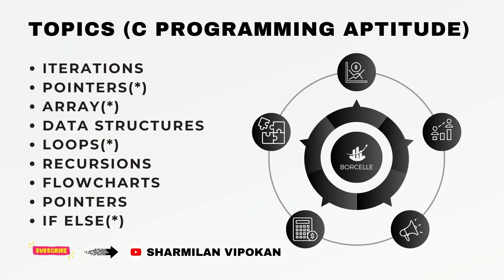Next is C programming aptitude. Topics include: Iterations, Pointers, Arrays, Data Structures, Loops, Recursions, Flowcharts, Pointers and efforts. These are the main important topics. Pointers, Arrays, Loops, and if-else are key. There will be MCQ type questions — select output or missing statement, or find an error. Clear the basic programming concepts to clear the C programming aptitude. It's easy if you understand the basic programming concepts.